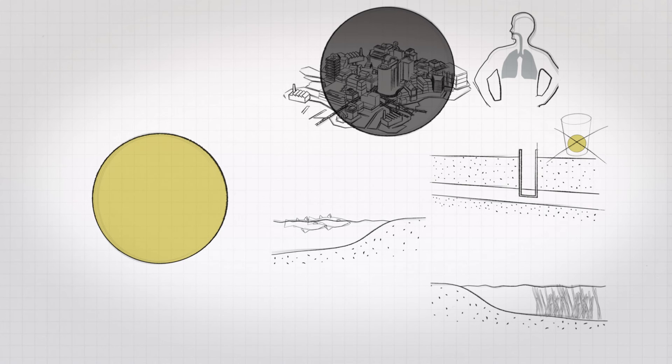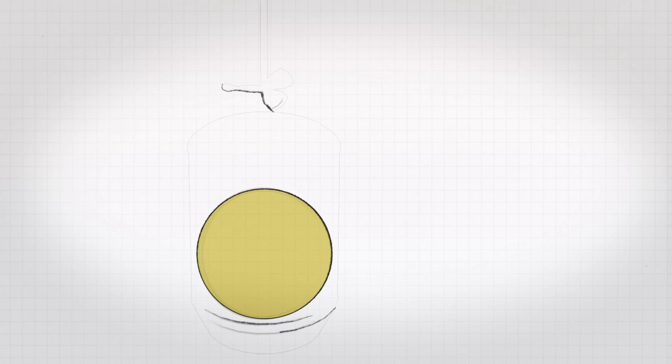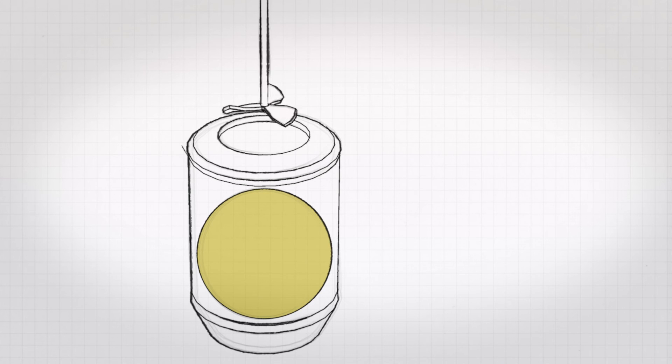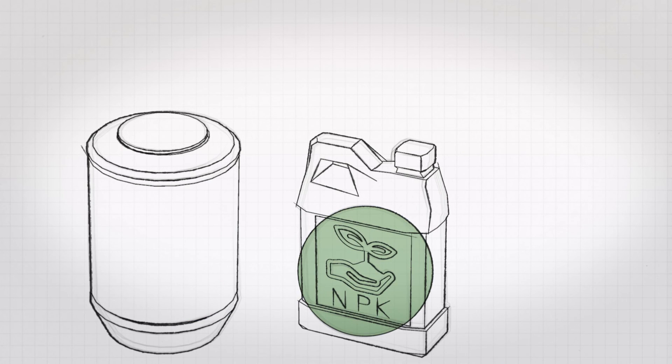When urine is properly stabilized, it maintains its valuable nutrients, limiting the hazardous release of nitrogen into the environment. As nitrogen from stabilized urine does not degasify, producing fertilizer from it is not harmful to humans or the environment and it also does not have malodor.